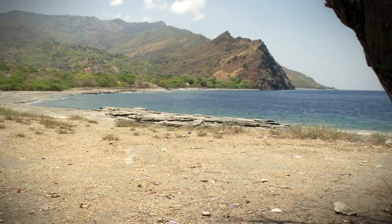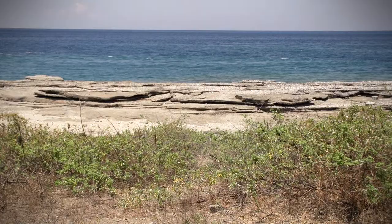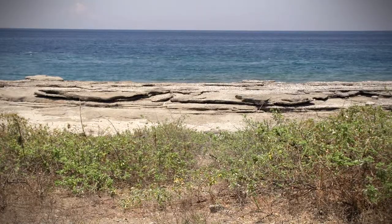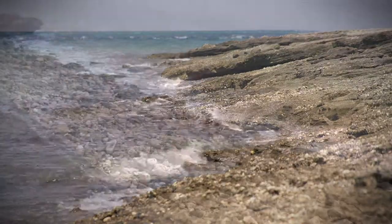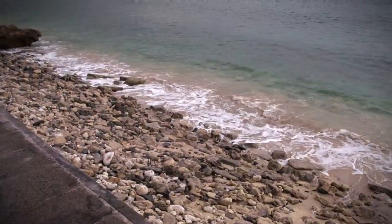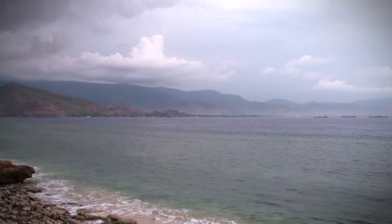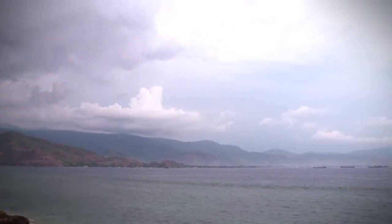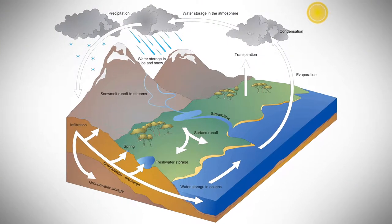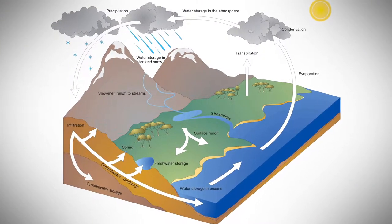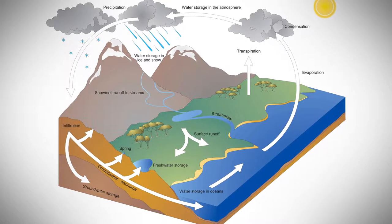Water is all around us. Most of the world's water is stored in the oceans and is very salty. Evaporated from the oceans, fresh water condenses into clouds where it can fall out as rain or snow. Some of the fresh water falls on the land, such as Timor-Leste, and this is where we get all of our fresh water from.